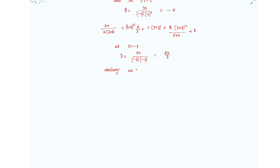We can calculate the remaining constant C at any arbitrary value of s, since we already know the values of A, B, and D. Substituting those known values yields C equals 40/9.